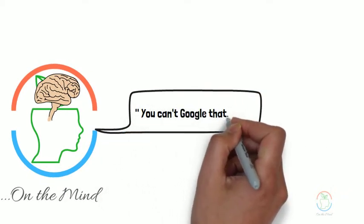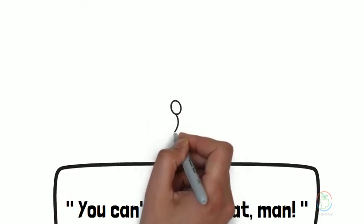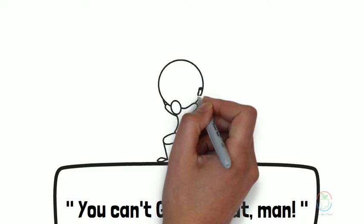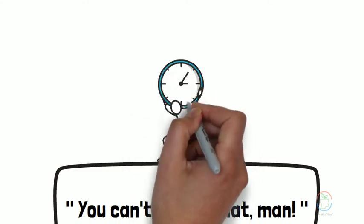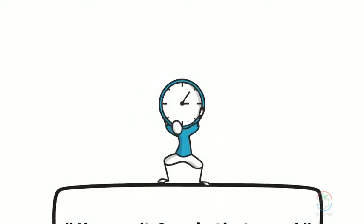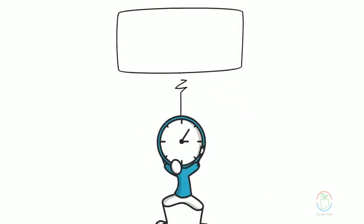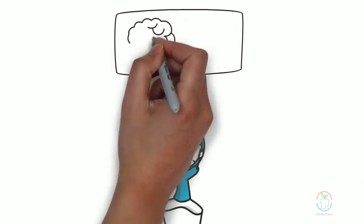You can't Google that, man. You're alone. You may have a shrink, you may have a best friend, but there's 24 hours in the day where you're alone in this brain and your brain is talking to you in all kinds of ways and it wants to control you.